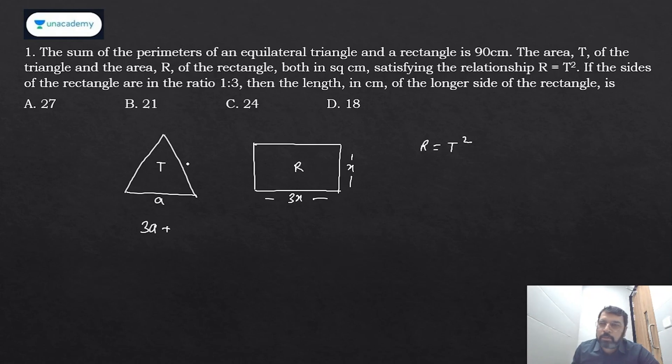Sum of perimeter means 3a (perimeter of triangle) plus 2(4x) = 8x, which equals 90. That is equation 1. Also, R = T², so rectangle area 3x × x = 3x² equals area of triangle (√3/4 × a²)².